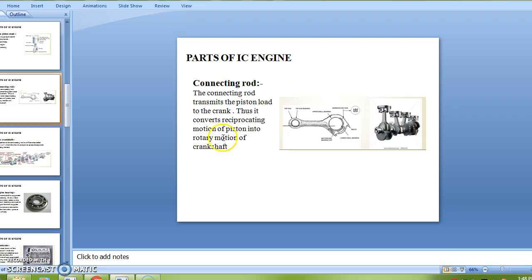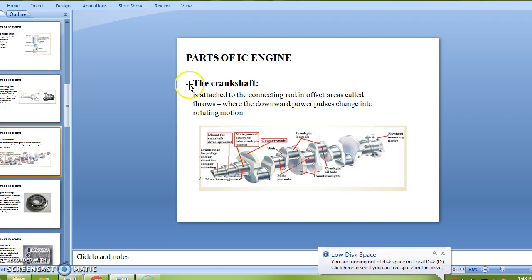Next part is the crankshaft, which is attached to the connecting rod in offset areas called throws, where the downward power pulses change into rotating motion.